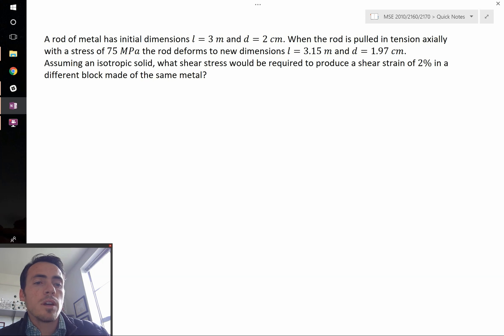Then it says, assuming an isotropic solid, what shear stress would be required to produce a shear strain of 2% in a different block made of the same metal?